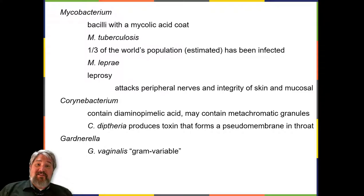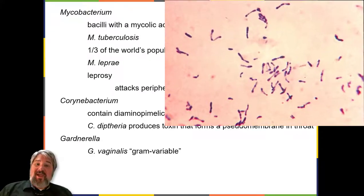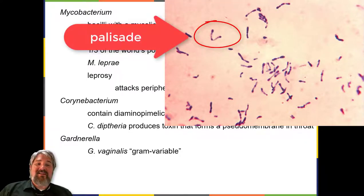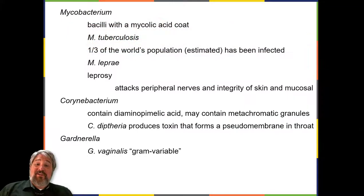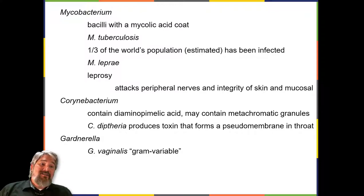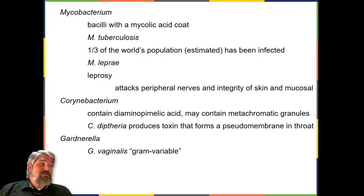Bacteria in the genus Corynebacterium contain diaminopimelic acid in their cell walls, and microscopically often form palisades, or pairs of rod-shaped cells resembling the letter V. Cells may contain metachromatic granules — intracellular storage of inorganic phosphates — that are useful for identification. The vast majority of Corynebacterium species are non-pathogenic. However, Corynebacterium diphtheriae is the causative agent of diphtheria, a disease that can be fatal, especially in children.